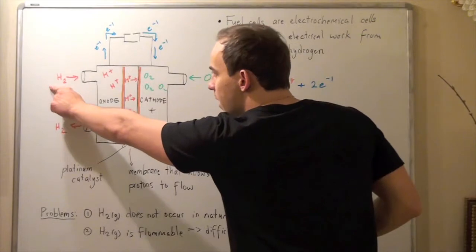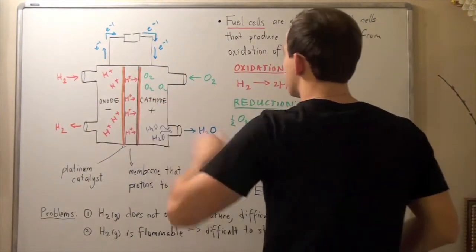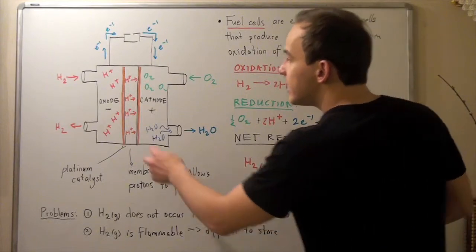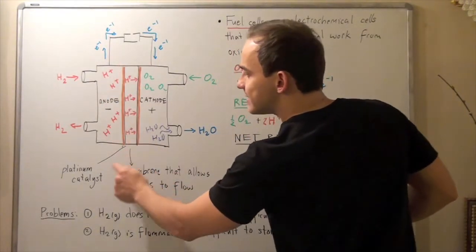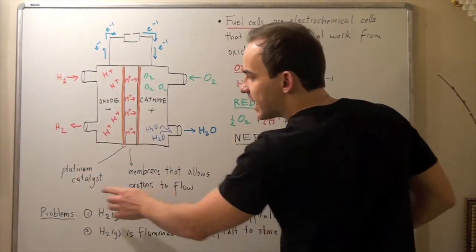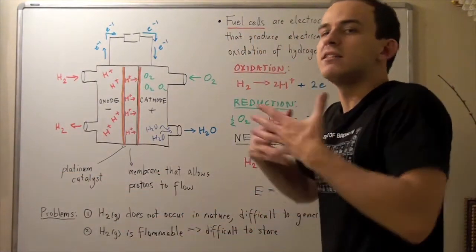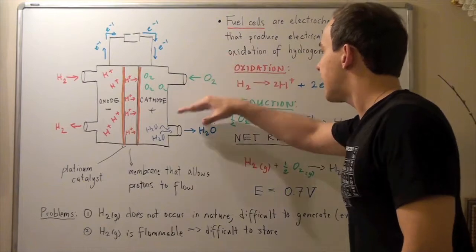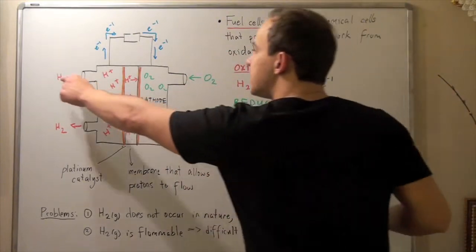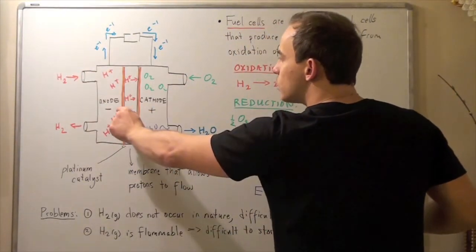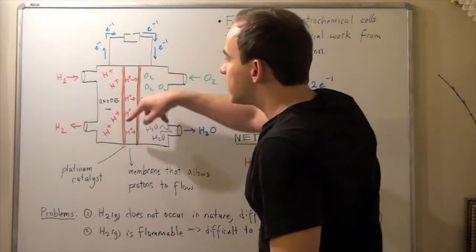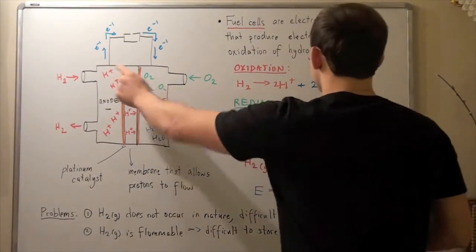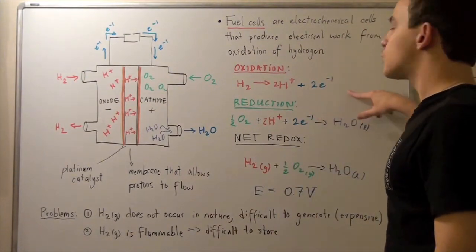So when this H2 molecule enters our system, it is oxidized. But how is it oxidized? Well, this brown layer is a platinum catalyst. This platinum acts to catalyze or speed up that reaction going from our reactant to products. So when this guy enters our anode, it reacts with the platinum catalyst producing two moles of H-plus ions and two moles of electrons.